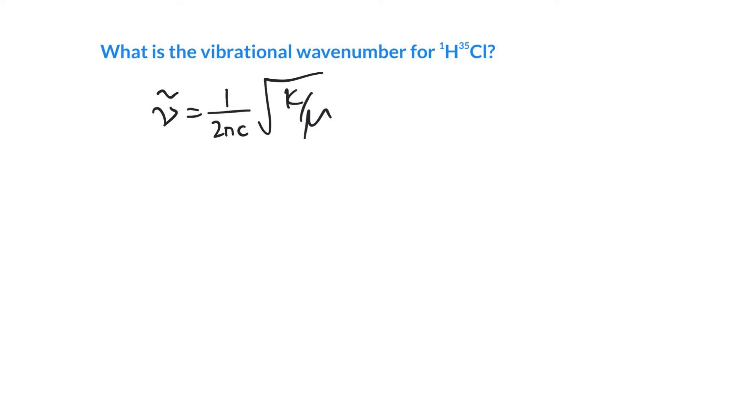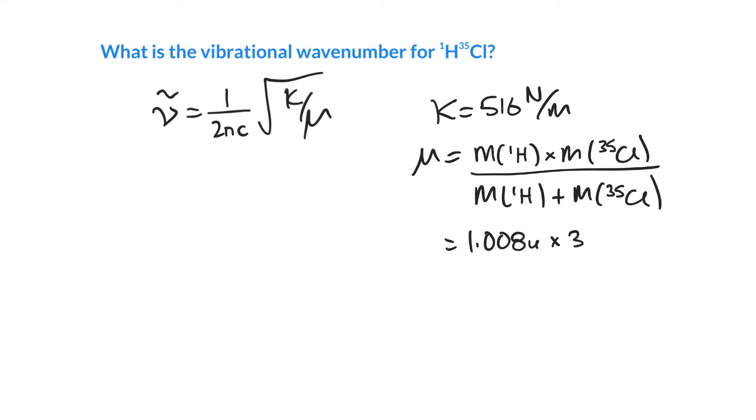The force constant we can look up, and it is about 516 newtons per meter. The reduced mass we have to calculate. It is the mass of proteum 1H times by the mass of chlorine 35. This is an isotopomer we're specifying here, the specific isotopes of the atoms in our molecule. We can look these up in the CRC handbook. The mass of hydrogen is 1.008 atomic mass units, and chlorine 35 is 34.969. We add those two on the bottom. At the end of the day we will have units of atomic mass units. I get that to be 0.9797 mu. Notice essentially the motion is just that of a hydrogen. The chlorine is so heavy, during the vibration the hydrogen really moves. The chlorine basically stays put.